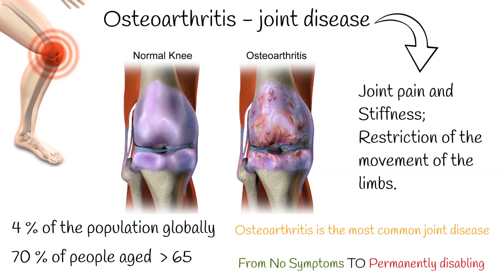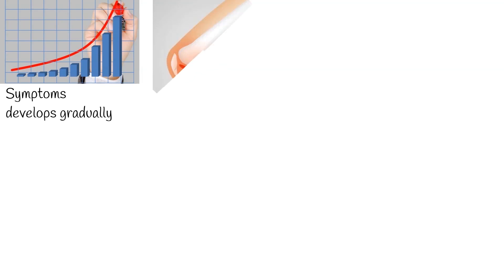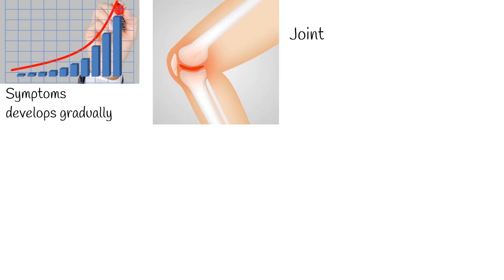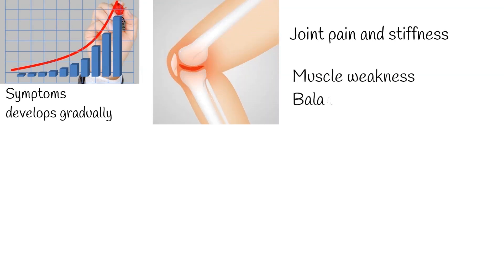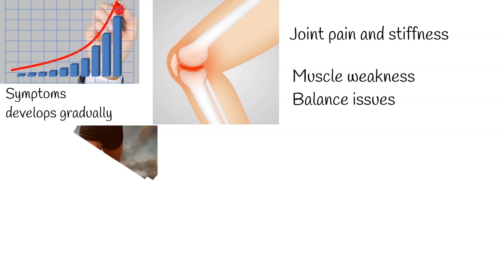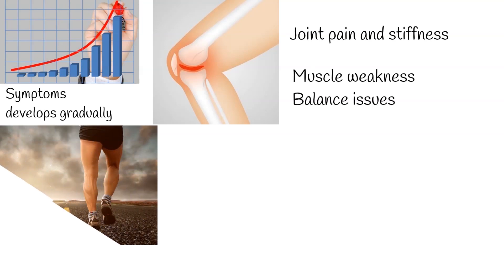Symptoms can be very variable, from merely asymptomatic — meaning no symptoms — to a devastating and permanently disabling disorder. Symptoms develop gradually; joint pain and stiffness are common.